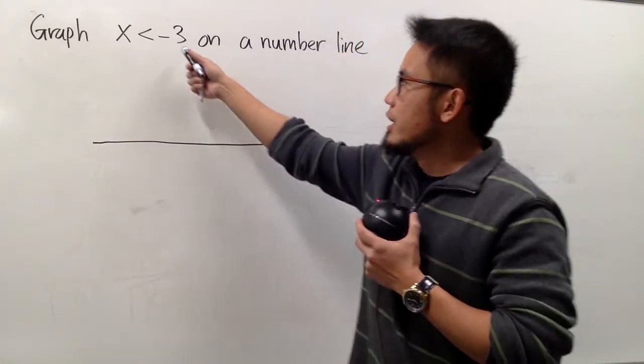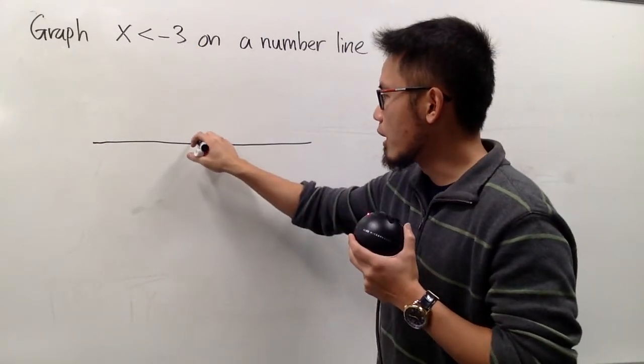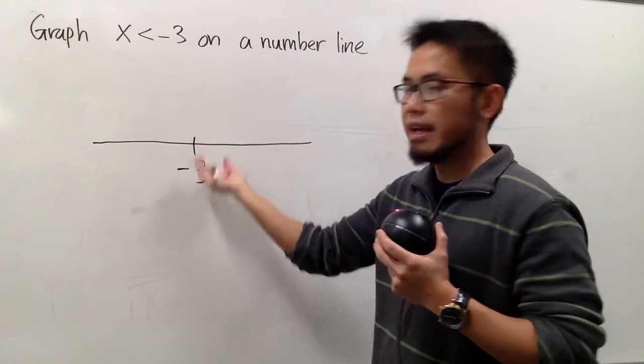And then, here we have the number negative 3, so we can just go somewhere on the number line and make a mark, say this is negative 3, okay?